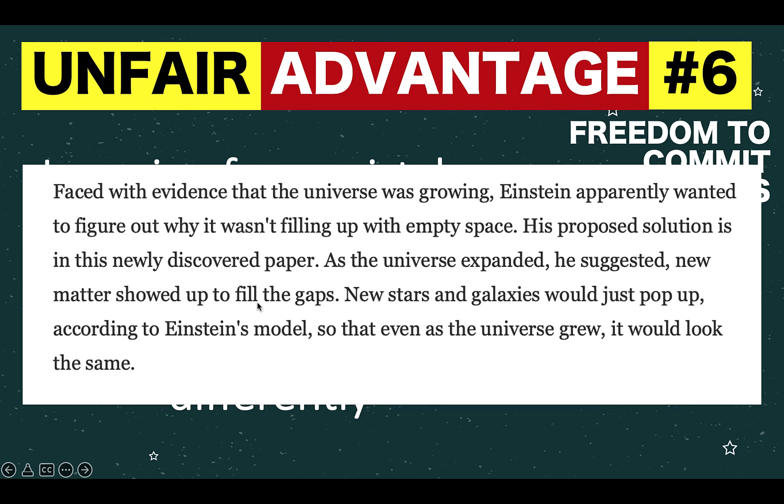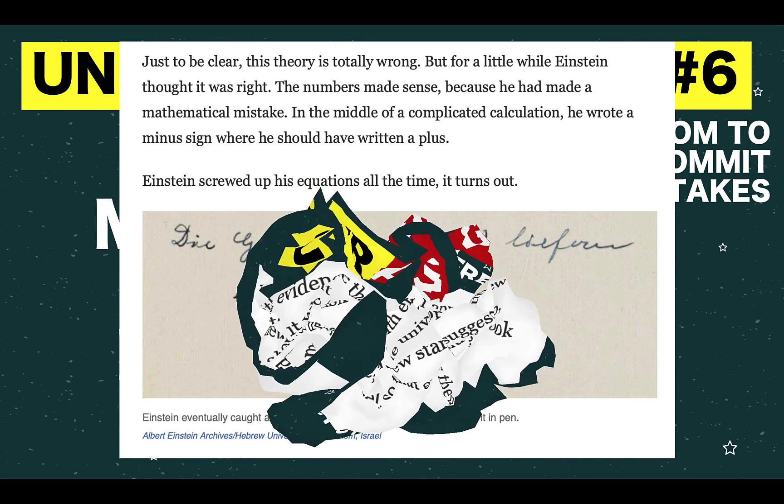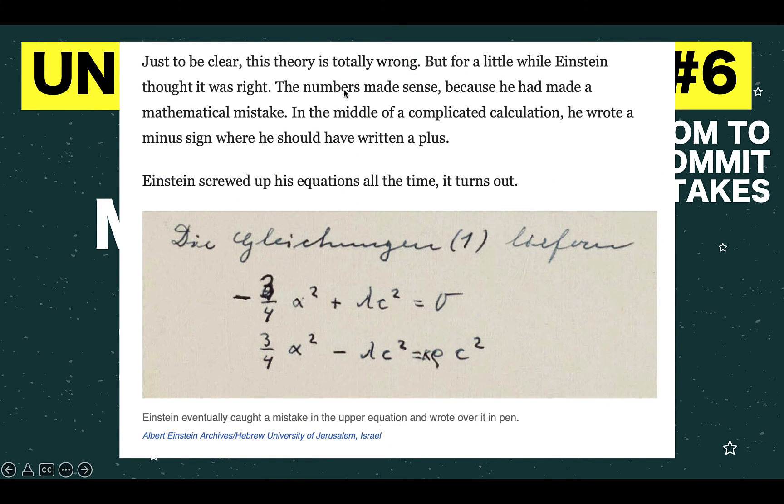That is, new matter showed up to fill the gaps in the universe. New stars in galaxies would just pop up according to Einstein's model. And based on Einstein's mathematical computation, the number made sense. But it was discovered that he made a costly mathematical mistake.